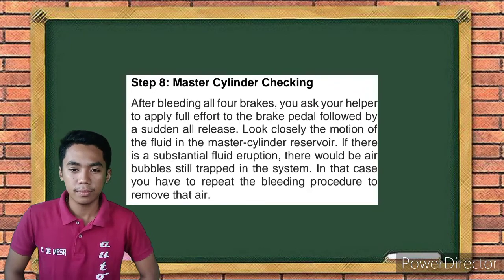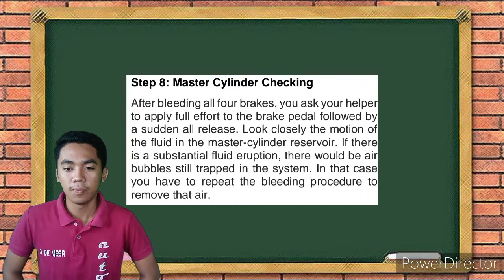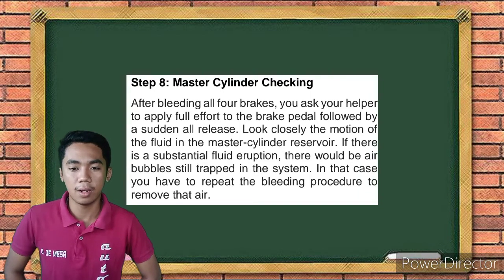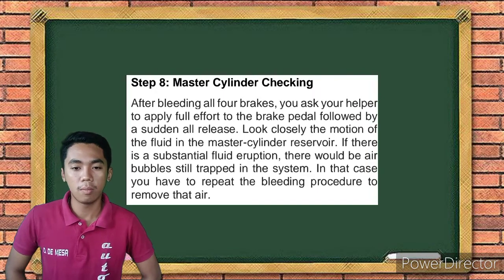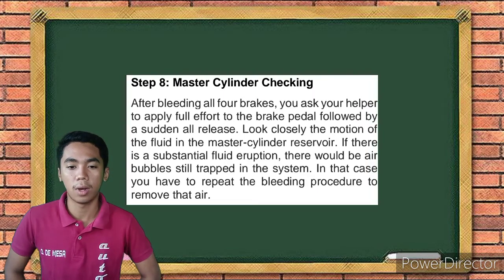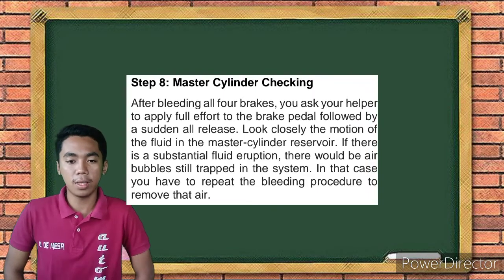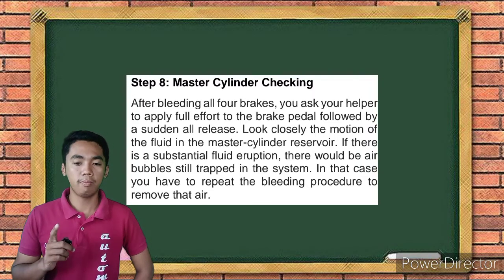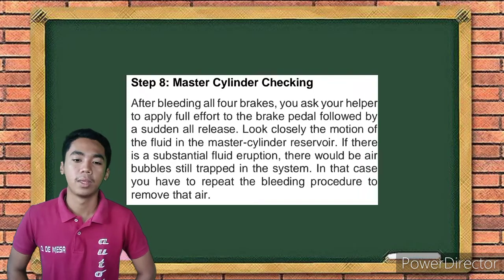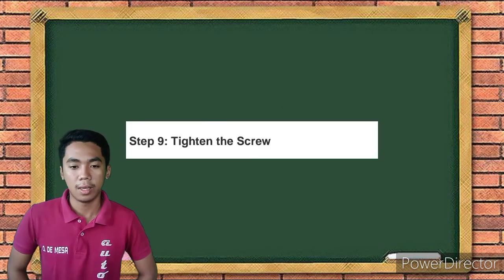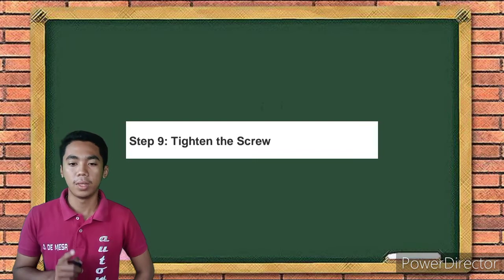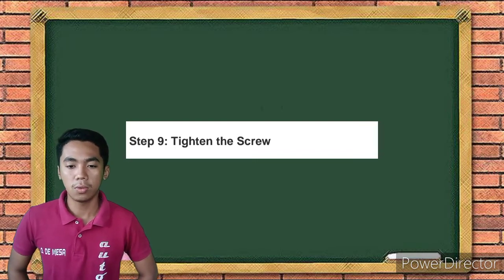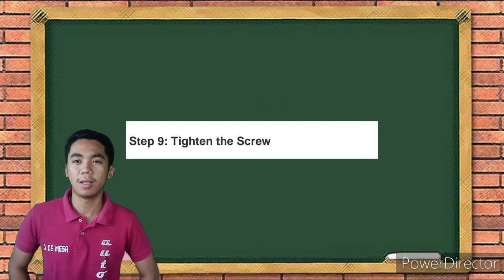Step six is to remove the bubbles. Tighten the screw while the helper is still holding the pedal down, then ask the helper to release the pedal and repeat this process of loosening and tightening until the fluid contains no more bubbles. Step seven is to bleed the brakes by repeating the same process for each brake, filling up the master cylinder with brake fluid before bleeding each one to avoid drawing air into the lines. Step eight is the master cylinder check — after bleeding all four brakes, have your helper apply full effort to the pedal then suddenly release it and check for fluid eruption indicating trapped air. Step nine is to tighten all screws and bolts to avoid air entering the brake system.